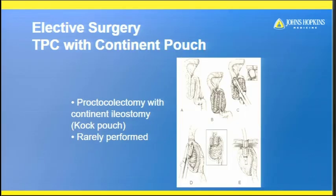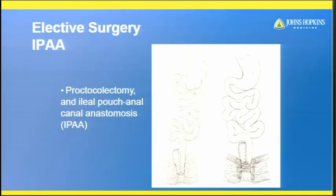The continent Koch pouch, where a pouch is formed inside and emptied by catheter a few times a day, has so many problems that it hasn't taken off — very few people still do it. The operation of choice is the ileal J-pouch, where the bowel is turned on itself and connected to the anus. This involves a proctectomy — removing the rectum — and an ileo-anal J-pouch anastomosis.